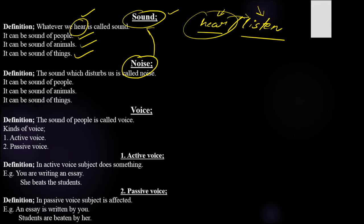Noise is the sound that disturbs us. For example, the sound of people can disturb you — if you have a headache and someone sings in front of you, you would say 'your sound is disturbing me.' So the sound which disturbs us is called noise. That can be the sound of people or the sound of animals — like a dog barking at night while you are sleeping, which disturbs you. That is called noise.